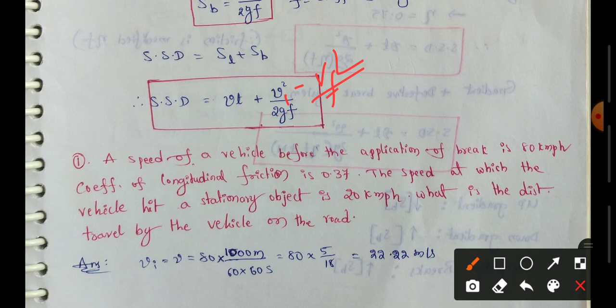So first one, VI equal to V, 80 kmph initial vehicle speed. 80 into 1 km is equal to 1000 meters. Hours is equal to seconds. So second log is 60 minutes into 60 seconds equal to 60 into 60.